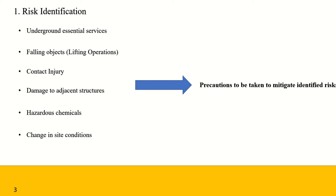Risk identification determines what might happen that could affect the objectives of the project, and how those things might happen. The risk assessment process starts with the question: what can go wrong? The identification of what can go wrong entails defining risks and risk scenarios.